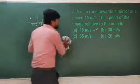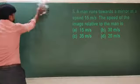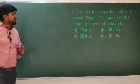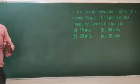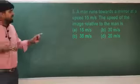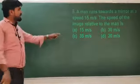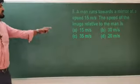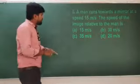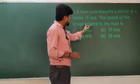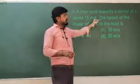Next question: a man transports a mirror at a speed of 15 meters per second. They are asking for the relative velocity between the image and the man.